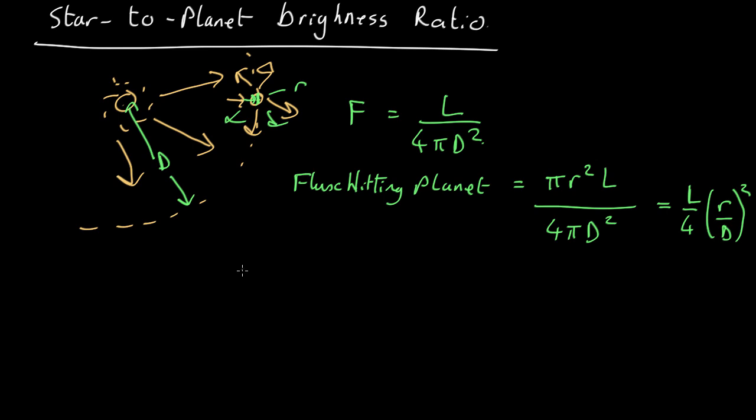In that case, the luminosity of the planet is going to be this. So the ratio of the luminosity of the star to the planet is going to be L over that, so it's going to be 4d² over r². So that's the ratio.